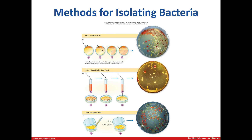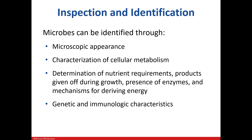The pour plate method and spread plate methods are also utilized. After inoculation and incubation, you can now begin the identification process. This can be achieved by the use of a microscope, metabolic properties such as fermentation. Special media can also be used to identify specific nutrient requirements, whether a microbe produces a particular enzyme, or how their energy is acquired. Further genetic and immunologic testing can also be done to identify a microbe to the species level.